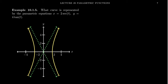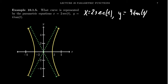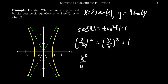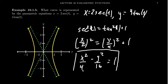Let's look at our last conic section: a hyperbola. For a hyperbola we use other trigonometric functions. Taking x equals 2 secant of t and y equals 4 tangent of t, the Pythagorean relationship we use is secant squared of t equals tangent squared of t plus 1. Solving for secant and tangent and substituting: (x over 2) squared equals (y over 4) squared plus 1. Moving the y term to the other side gives x squared over 4 minus y squared over 16 equals 1, the equation of a hyperbola.